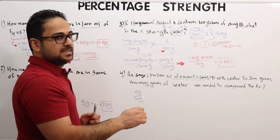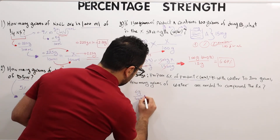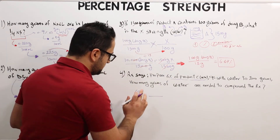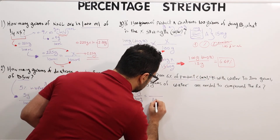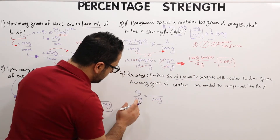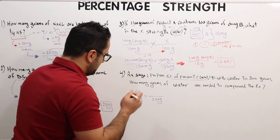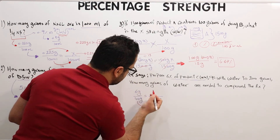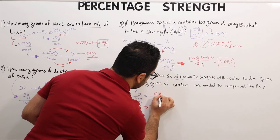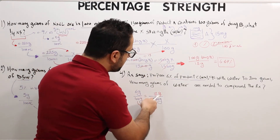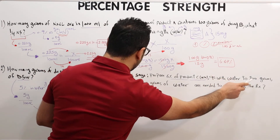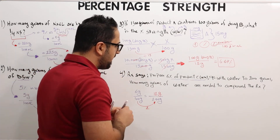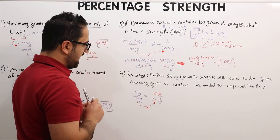We know 6% w/w means 6 grams of product C per 100 grams. To scale up to 200 grams, we multiply by 2: 6 grams times 2 equals 12 grams. So there are 12 grams of product C in 200 grams of the total compound.